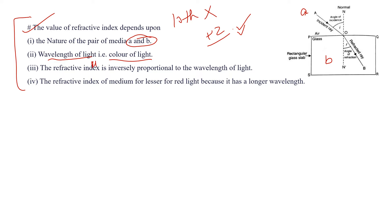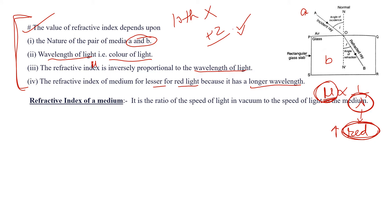The refractive index mu is inversely proportional to wavelength. The refractive index of the medium is lesser for red light because it has the longest wavelength. These points are for 10th class, not needed in plus 2.